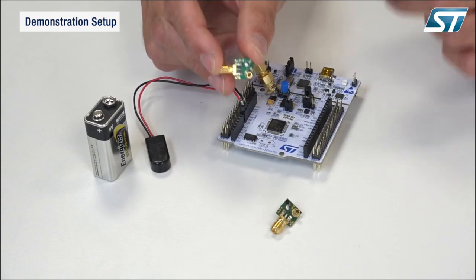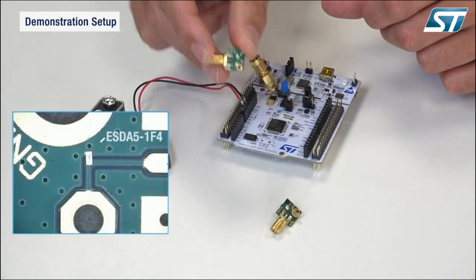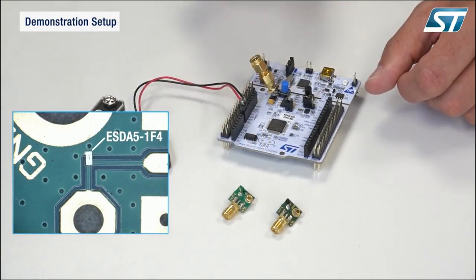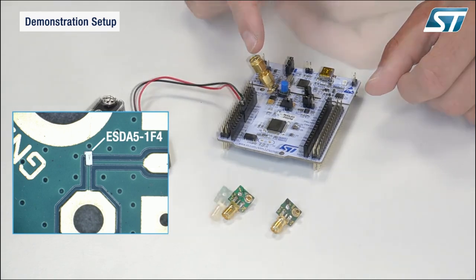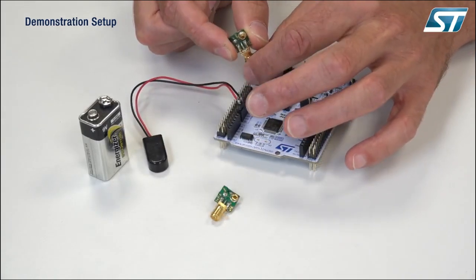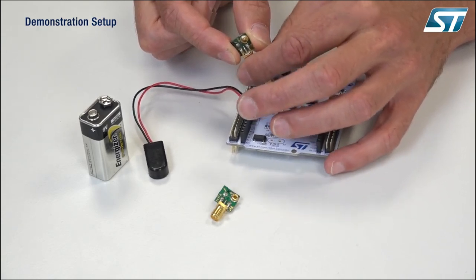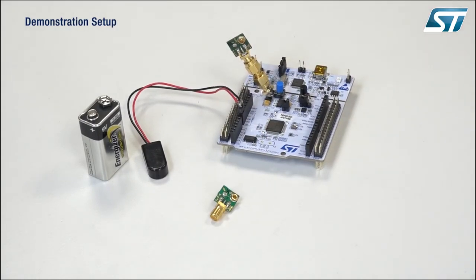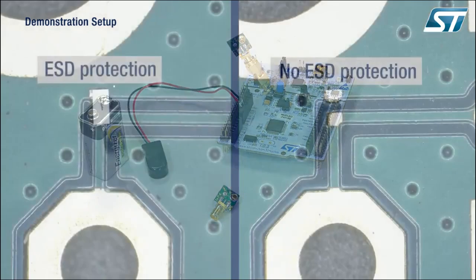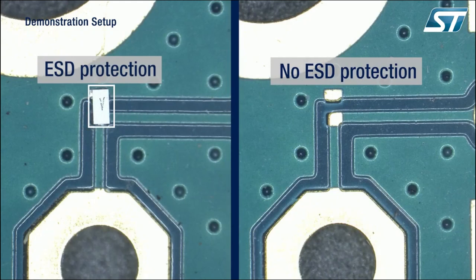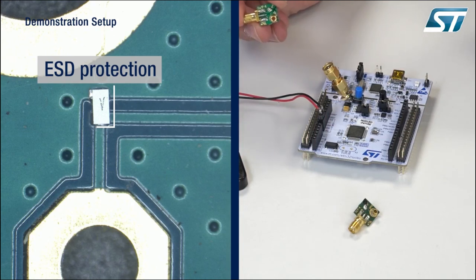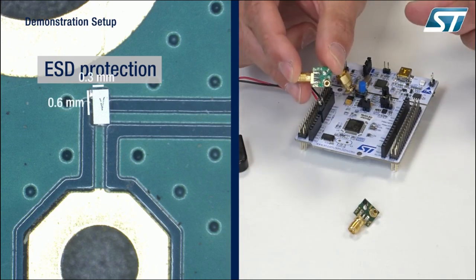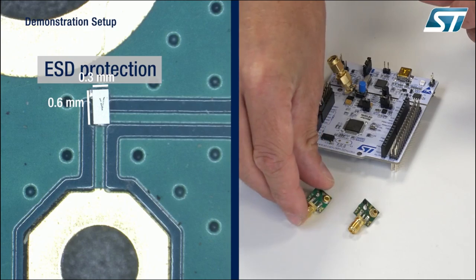For the purposes of the demo, an ESD protection device — ESDA5-1F4 — has been added in parallel to the push button. The way it works is that the connector is soldered onto the push button, which then connects the ESD board to the microcontroller. To compare results, we have made two boards: one with ESD protection and one without. These boards are actually quite big compared to the size of the protection, which is just 0.6 x 0.3 mm.